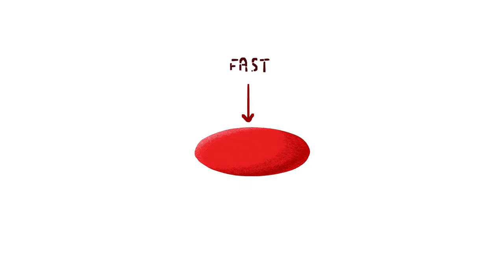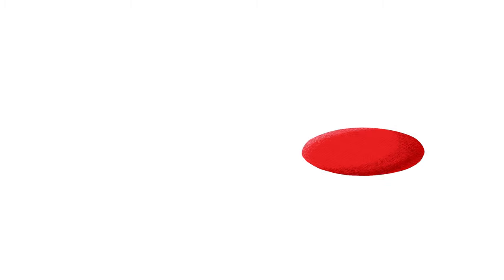If our subject is moving very quickly, then their form should stretch to imply that speed. When they come to a stop and lose all their momentum, their form should squash as the perceived energy builds up. As your subject loses momentum and expels the energy, the amount of squash and stretch should decrease accordingly.